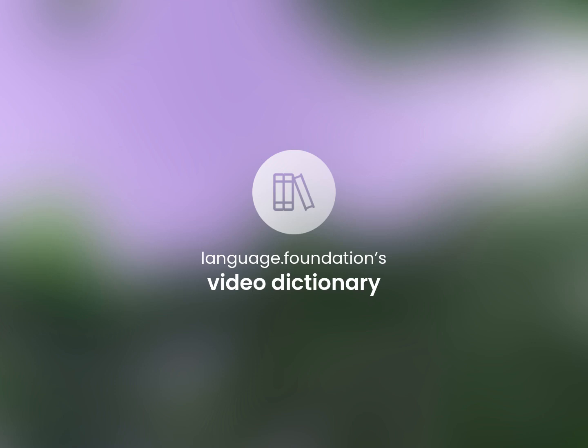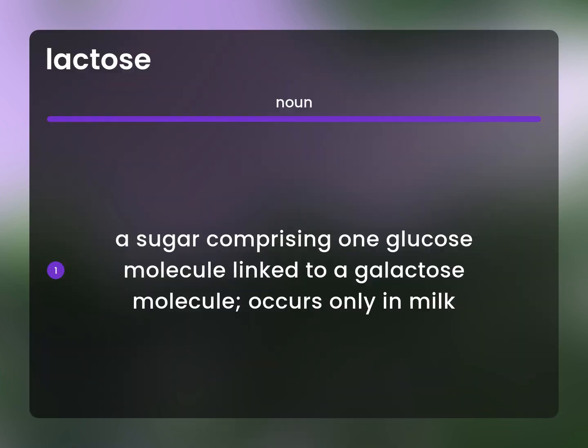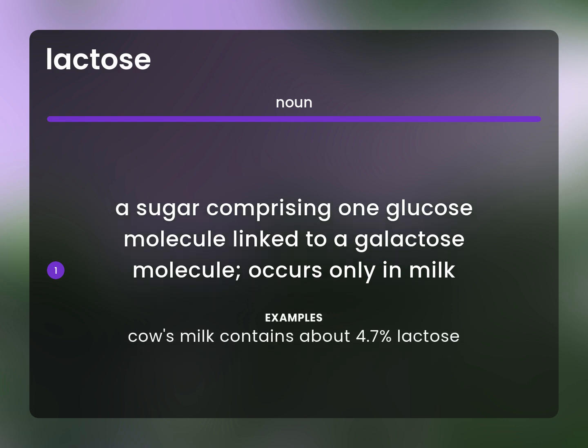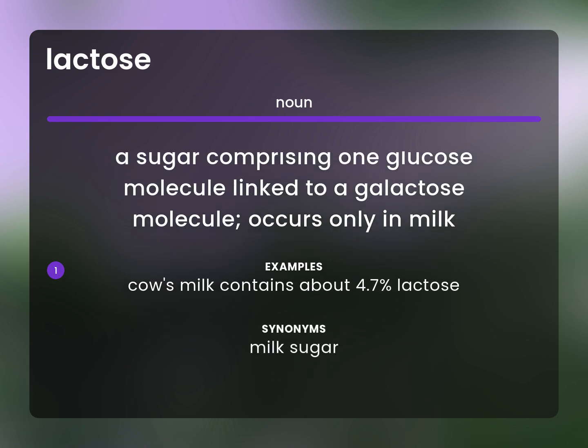Language.Foundation's Video Dictionary, helping you achieve understanding. A sugar comprising one glucose molecule linked to a galactose molecule, occurs only in milk. Cow's milk contains about 4.7% lactose. Milk sugar.